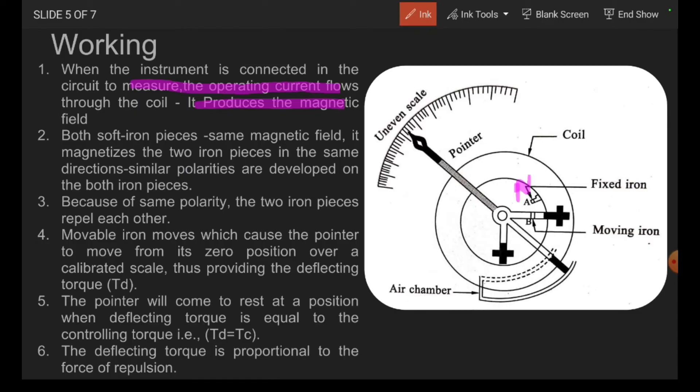Let it be the N and let it be the N, same polarities. Because of the same polarities, these two iron pieces repel each other. Movable iron moves which causes the pointer over a calibrated scale. This moving iron moves in a clockwise direction.